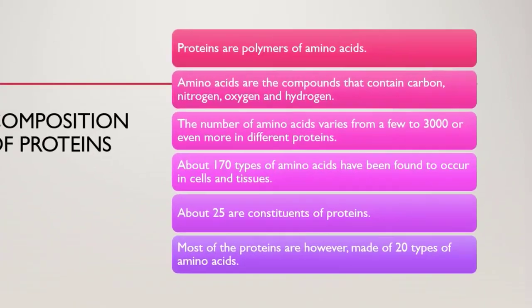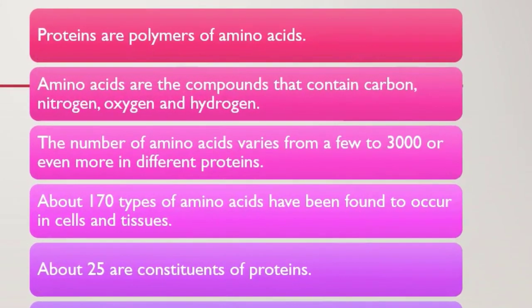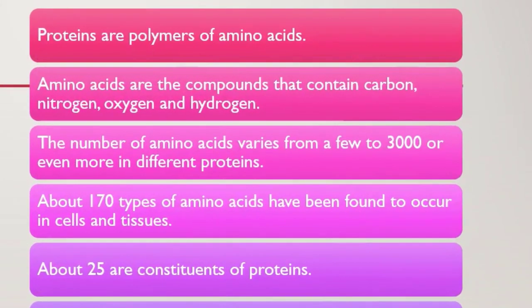Let's begin with the composition of proteins. Proteins are actually the macromolecules — macromolecules کا مطلب ہے کہ proteins are large in size. Proteins دراصل amino acids کے polymers ہوتے ہیں. Amino acids ان compounds کو کہا جاتا ہے جن کے اندر carbon, nitrogen, oxygen اور hydrogen موجود ہوں.